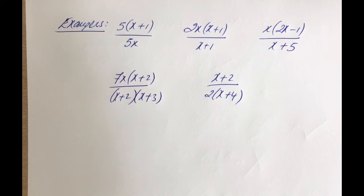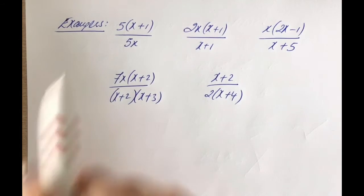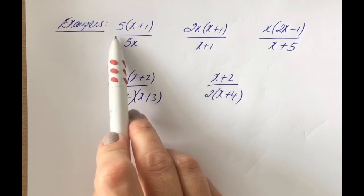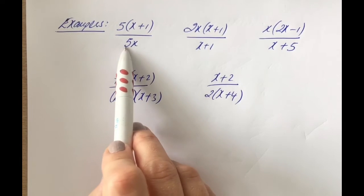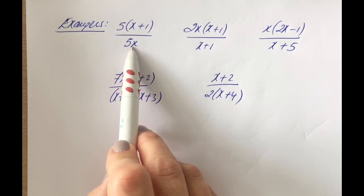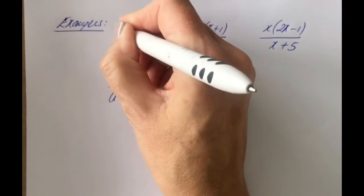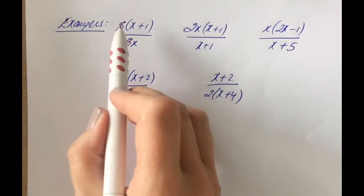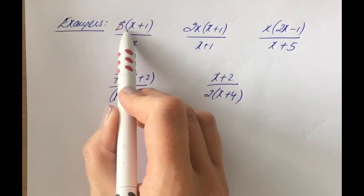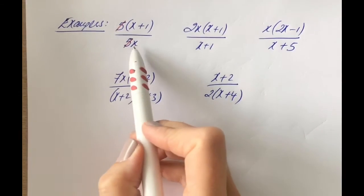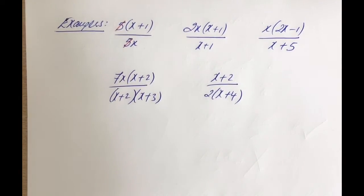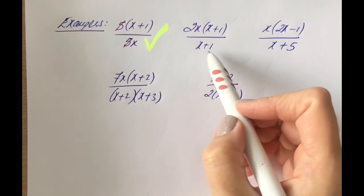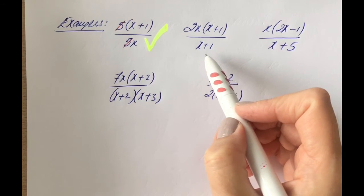Let's look at some examples. Here we have 5(x + 1) on the top and 5x on the bottom. Can we cancel the fives? Yes, because the 5 has been multiplied to everything in the brackets on top, and the 5 has been multiplied to everything on the bottom. So yes, that works.